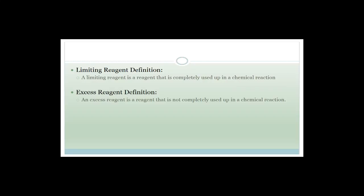A limiting reagent is a reagent that is completely used up in a chemical reaction, whereas an excess reagent is one that is not completely used up. When a question says one reagent reacts with excess of another, it means there's so much of one reagent you never have to worry about using it up. The limiting reagent controls how much product you get out.